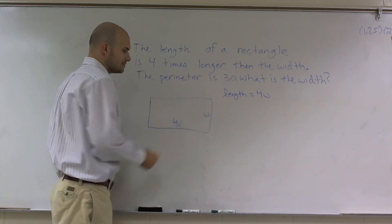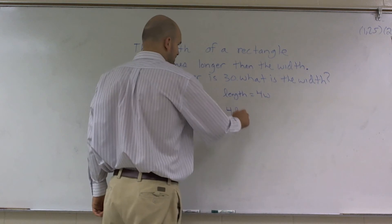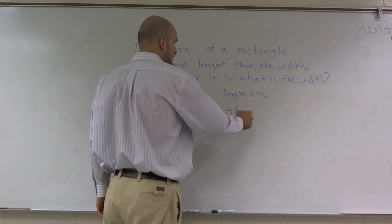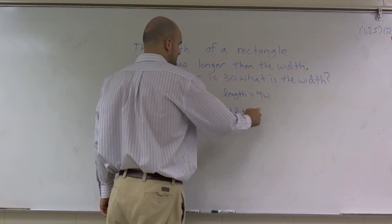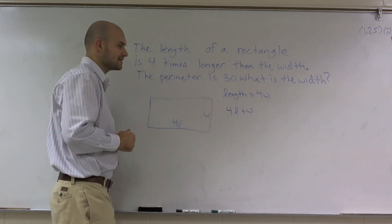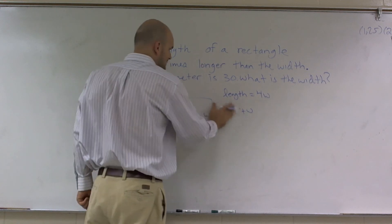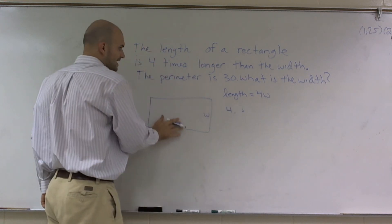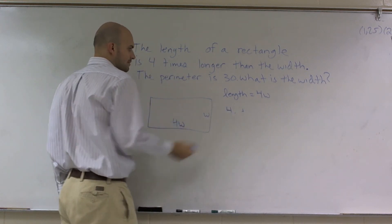So a big mistake that students make is writing 4l plus w. No, it's not 4l. That's four times the length. I want four times the width. So length is going to be four times the width, all right?